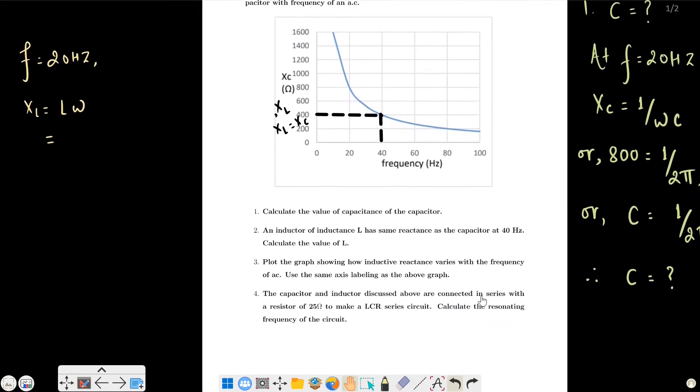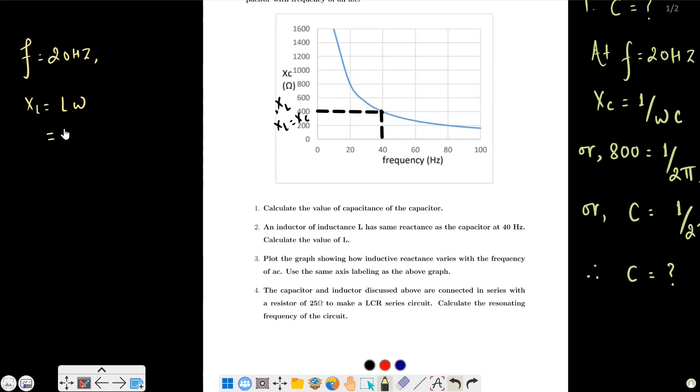At F equals 20 Hz, X_L equals 1.59 into 2 pi into 20 equals 199.8 ohms, nearly equal to 200 ohms. So at 20 Hz, X_L is 200 ohms.